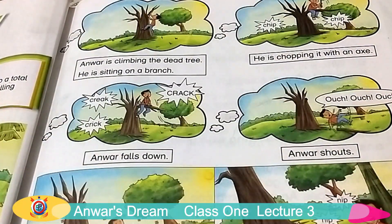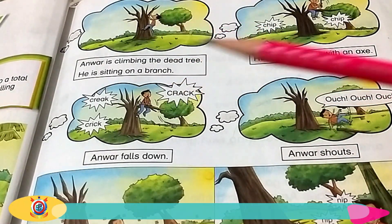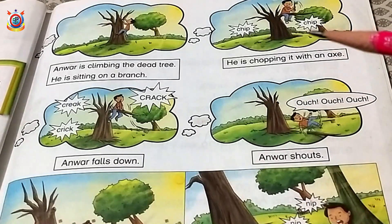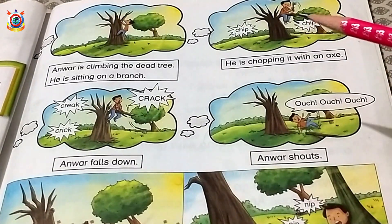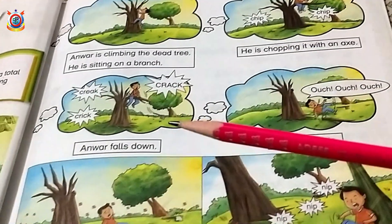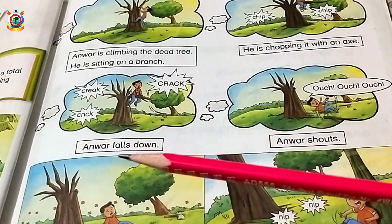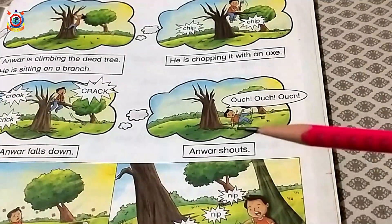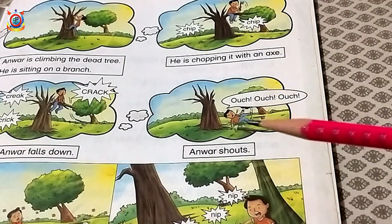Here comes the next part of this story. You can see Anwar is climbing the dead tree. He is sitting on a branch. Anwar is chopping it with an axe — 'chopping' means cutting. Then Anwar falls down because he is cutting the branch he is sitting on. And then Anwar shouts — ouch, ouch, ouch — because Anwar falls down.